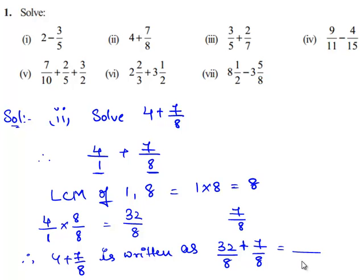The common denominator 8 remains as is, and in the numerator we add 32 and 7. Since 32 plus 7 gives 39, the solution for 4 plus 7 by 8 is 39 by 8.